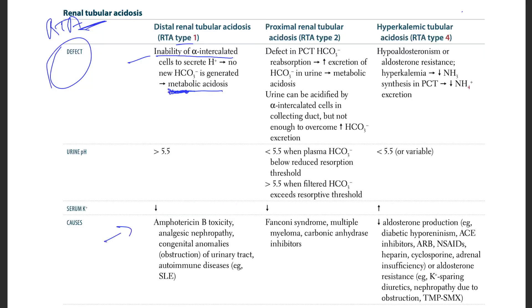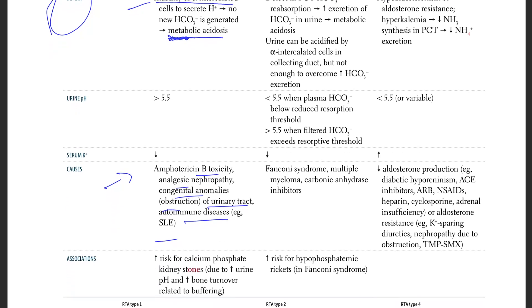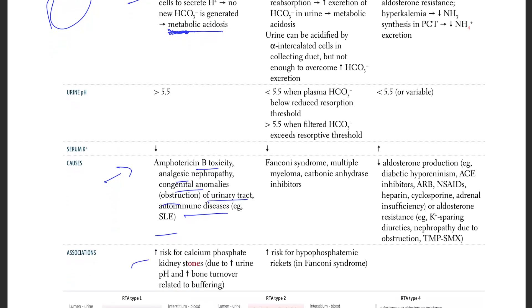The causes of RTA type 1 include amphotericin B toxicity, analgesic nephropathy, congenital anomalies, obstruction of the urinary tract, and autoimmune disease such as SLE. Associations include increased risk of calcium phosphate kidney stones due to increased urine pH and bone turnover related to buffering.